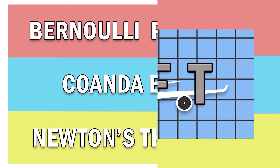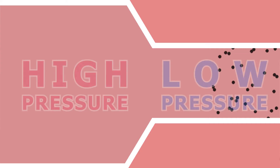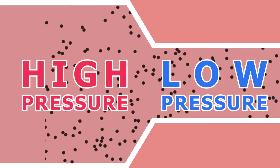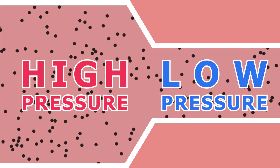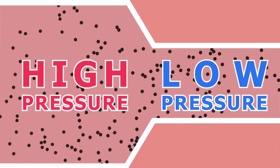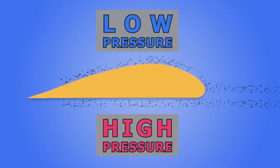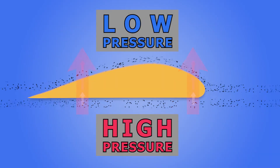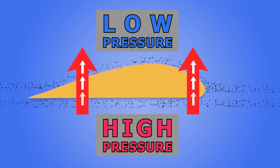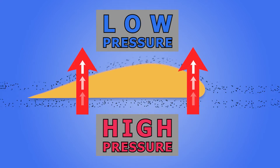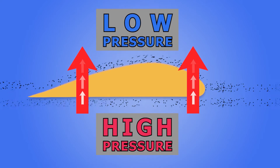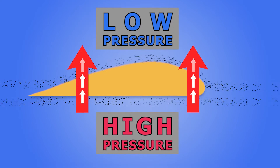Lift, which is the key principle of flight, is generally explained by three theories. First, the Bernoulli principle: as the speed of a moving gas increases, the pressure within the gas decreases. Wings have low pressure on top and high pressure at the bottom, thus a greater pressure is exerted in an upward direction, causing the wings to go up. However, it does not fully explain lift.